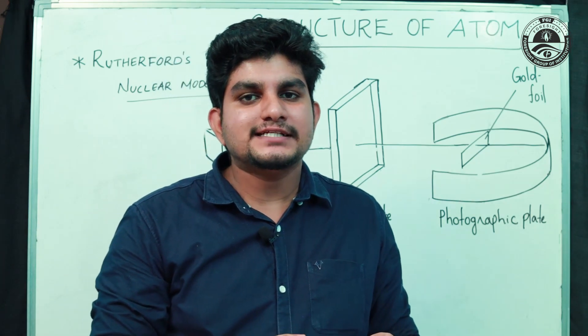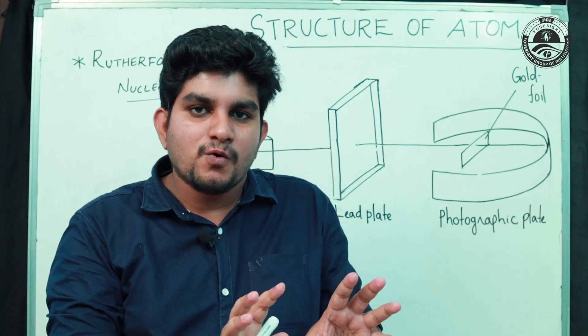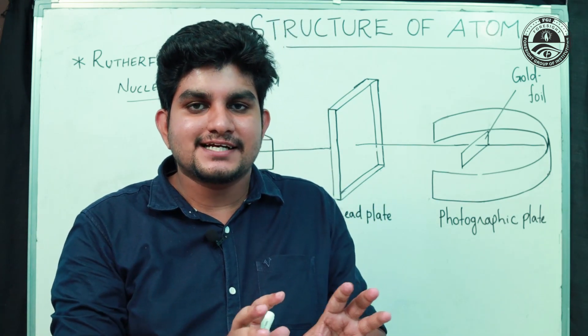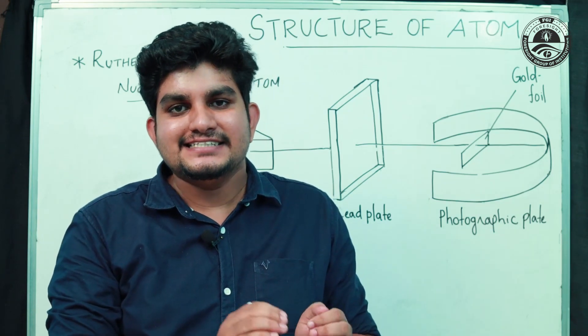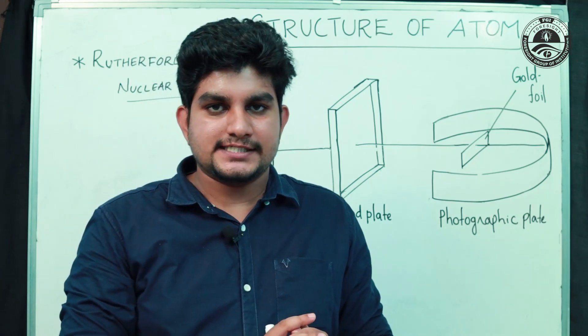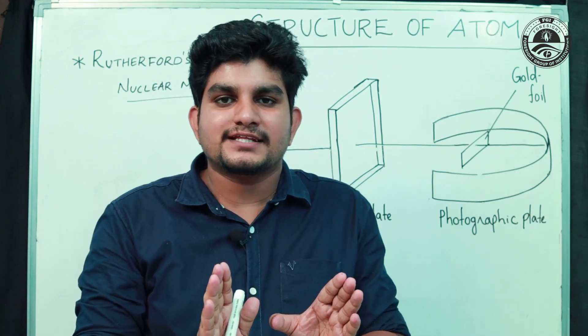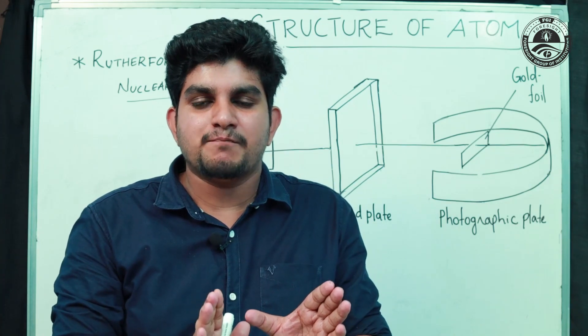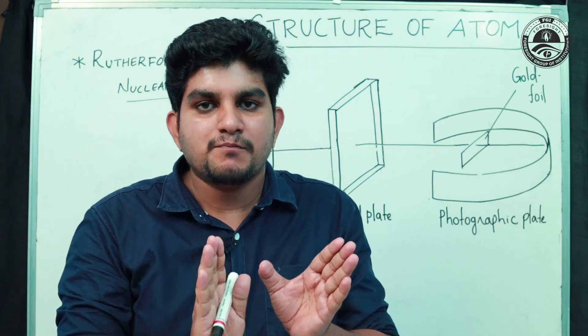One of the most famous atomic models is that of scientist J.J. Thomson. J.J. Thomson's model is called the Plum Pudding Watermelon Model.